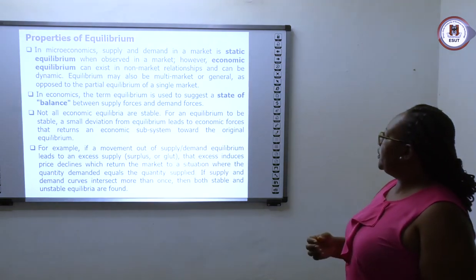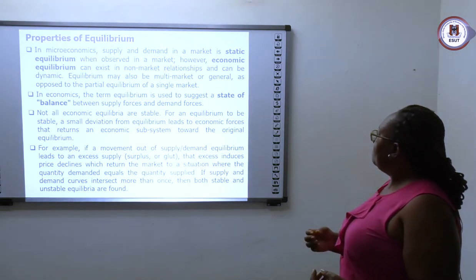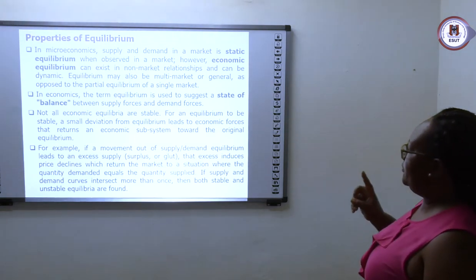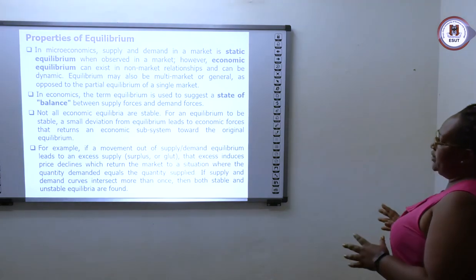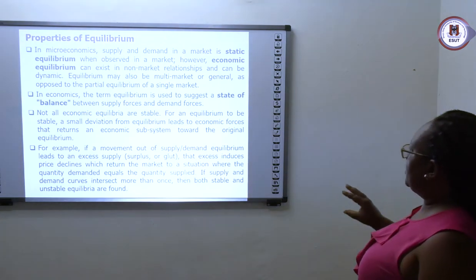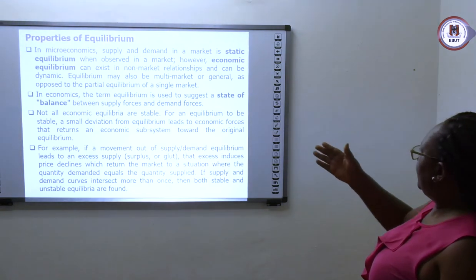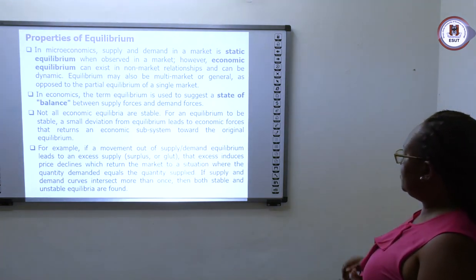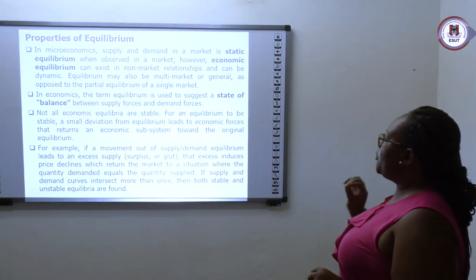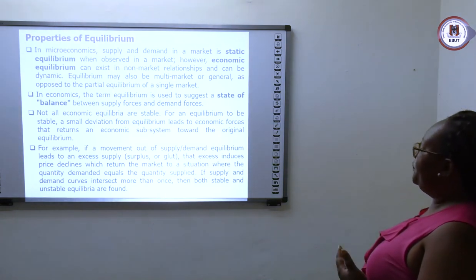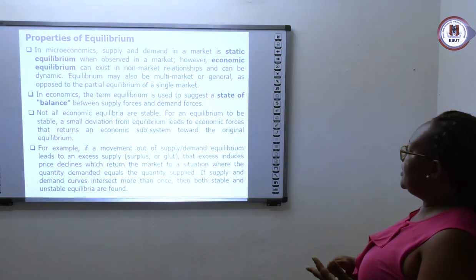Now, the properties of equilibrium. There are many ways some economists and schools of thought explain the properties of equilibrium — including static and dynamic approaches. To summarize it simply, the properties of equilibrium are just three: uniqueness, stability, and existence.